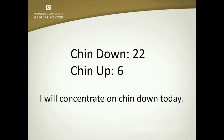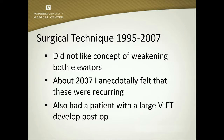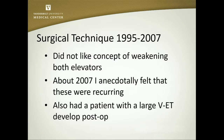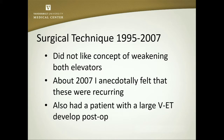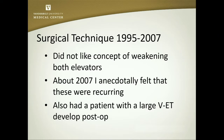22 of these patients had chin-down head positions. When I first started in 1995, with very little in the literature, I did not like the concept of weakening both elevators. So I started doing superior rectus recessions with inferior rectus muscle resections — 8-millimeter recessions of both superior rectus muscles and 8-millimeter resections of both inferior rectus muscles. About 10 years later, I anecdotally felt I was starting to see a lot of these patients come back with a residual chin-down head position. I also had one patient who developed a large V-pattern esotropia postoperatively.